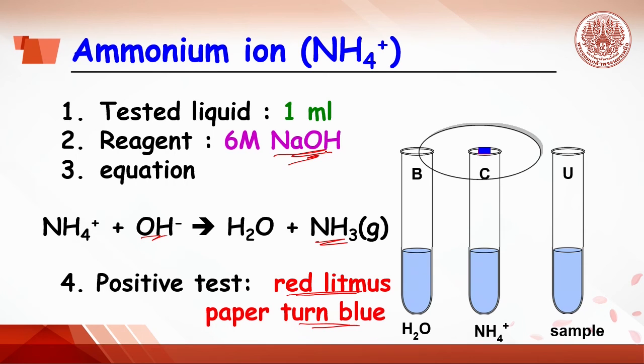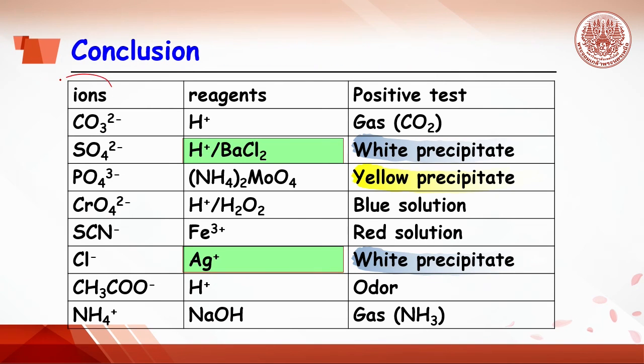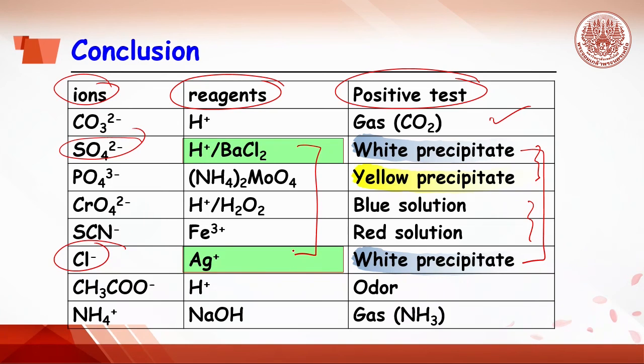In conclusion, for spot test: ion, reagent, and positive test. The positive test might be bubble, or precipitate, or color of the solution change. For example, the test of sulfate ion and chloride ion get the same positive test which is white precipitate, but it uses different reagents. Hence, keep in mind, each ion gives positive test with their own reagent.